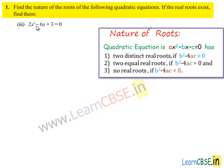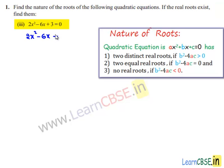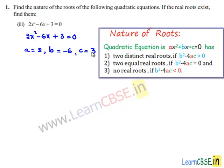Now coming to the third problem. The given equation is 2x² - 6x + 3 = 0. Comparing with the standard equation ax² + bx + c = 0, we get a = 2, b = -6, and c = 3.